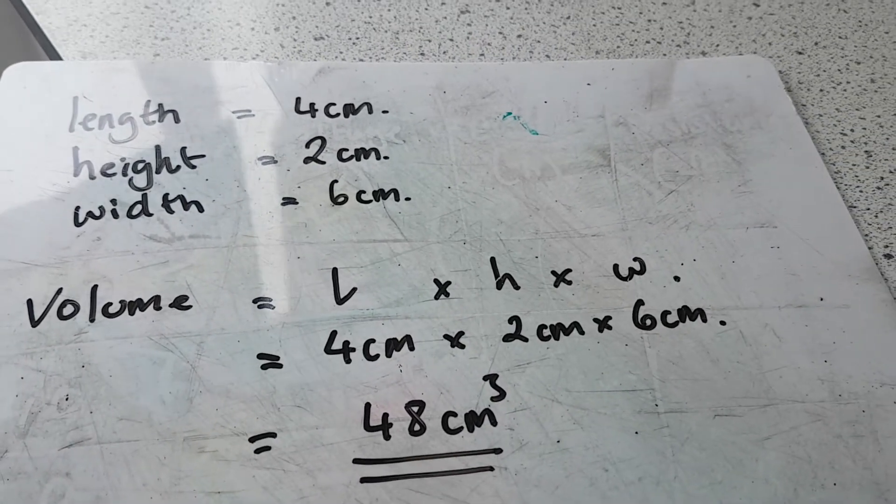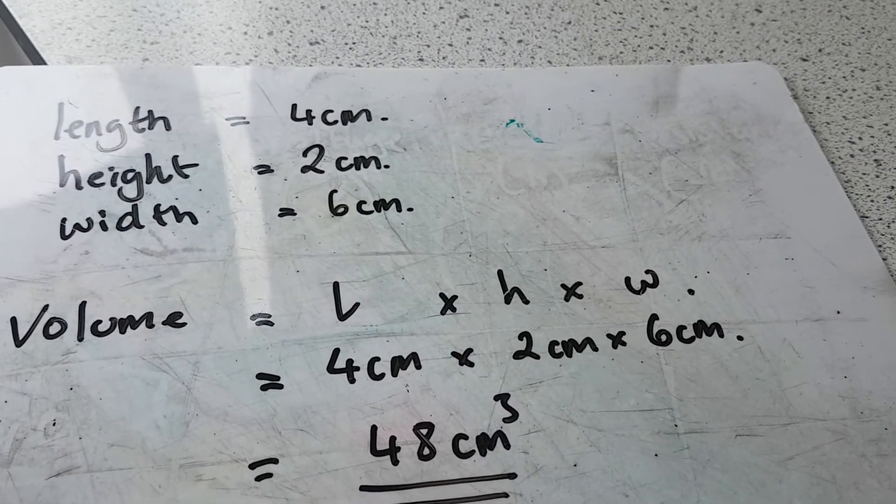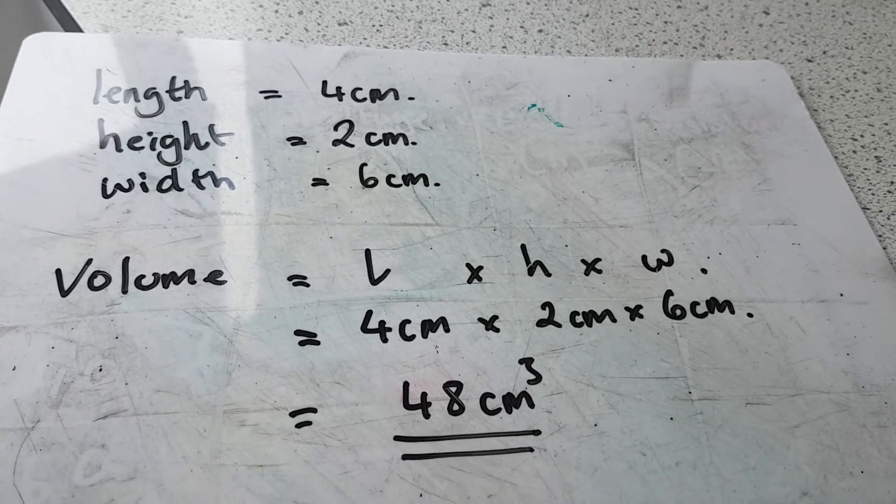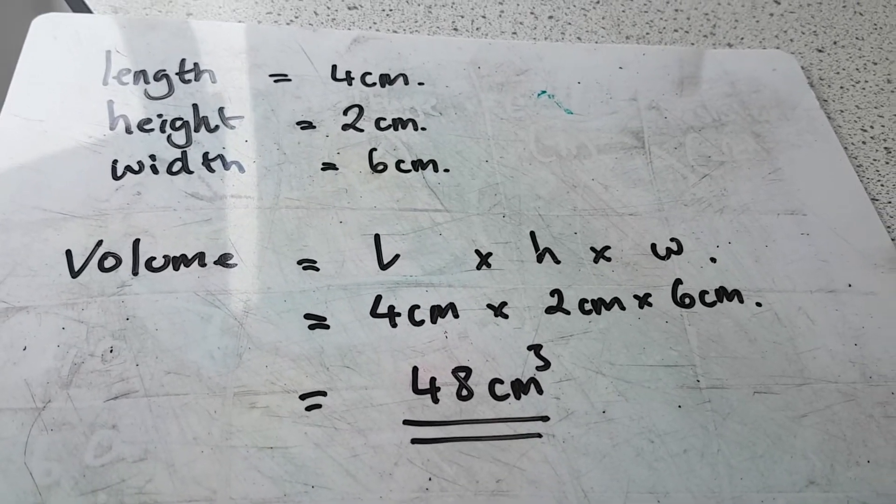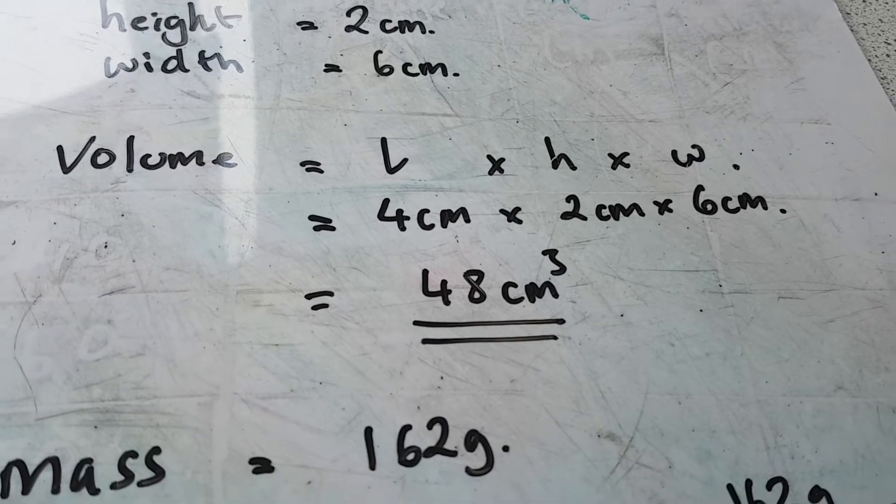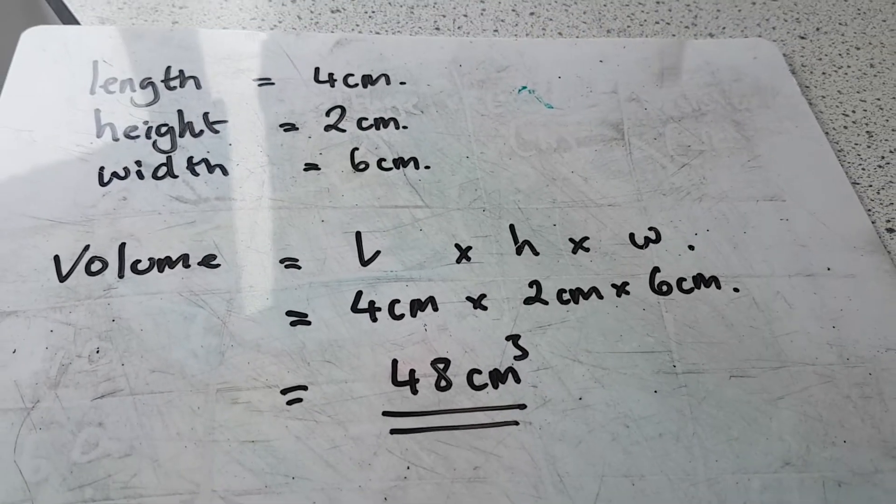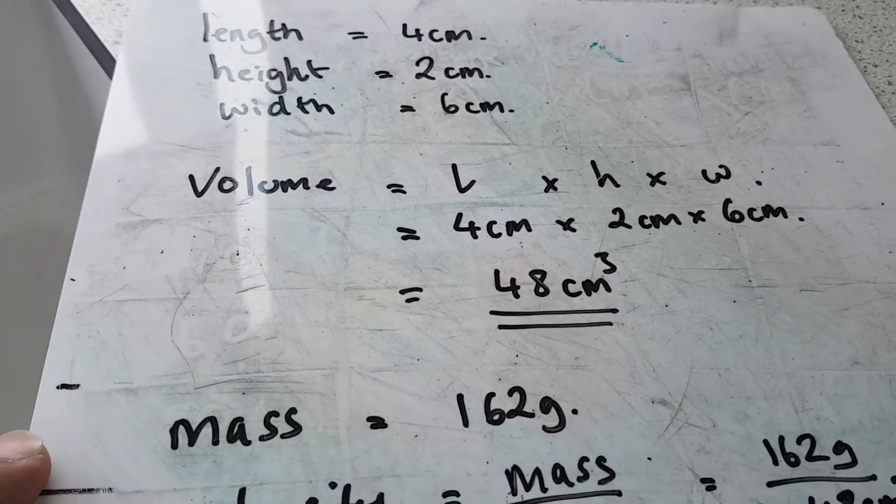So I've worked out my volume. My volume is length times width times height. L times H times W. So it's 4 centimeters times 2 centimeters times 6 centimeters, which is going to give me 48 centimeters cubed. That's my volume of the aluminum block.